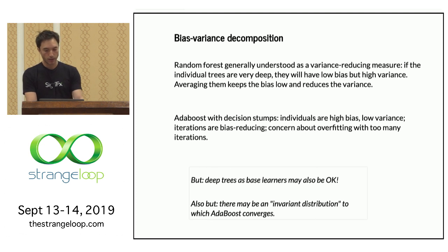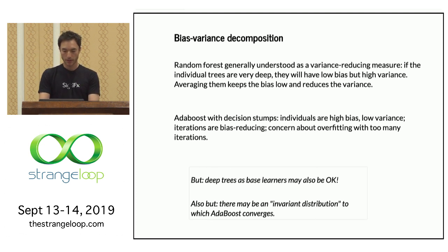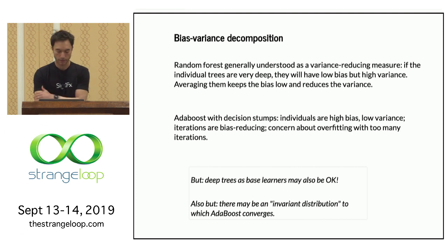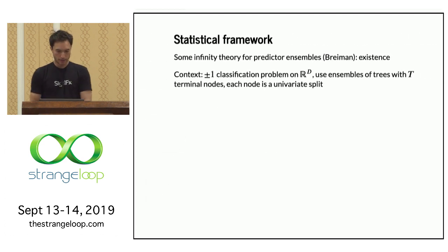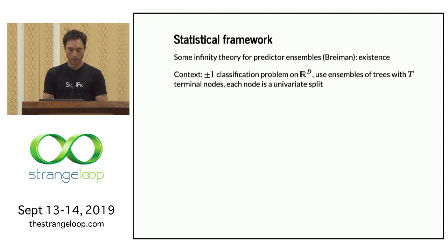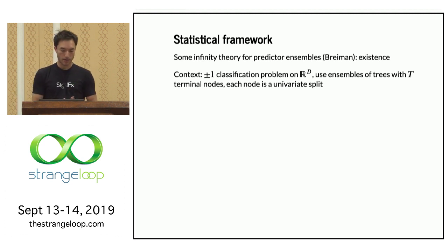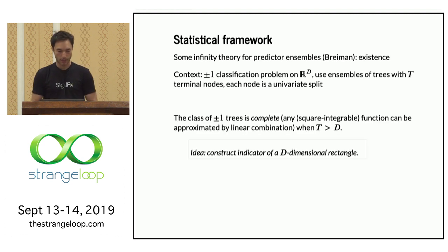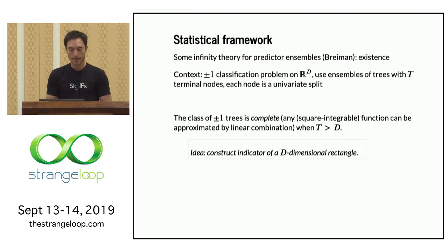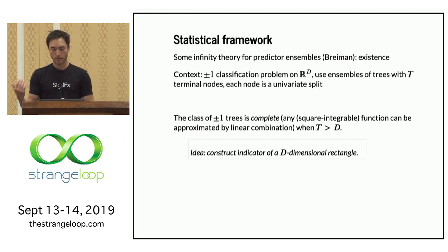Now I'll move to some more specific statistical arguments for the random forest or for analyzing trees in general, drawn from a paper by Leo Breiman. We give ourselves a two-class problem on a D-dimensional Euclidean space, and use decision trees with T terminal nodes, where each node is a one-variable split. Breiman proves that the class of trees is complete in the sense that you can approximate any function, as long as the number of nodes is larger than the dimension of the input space.